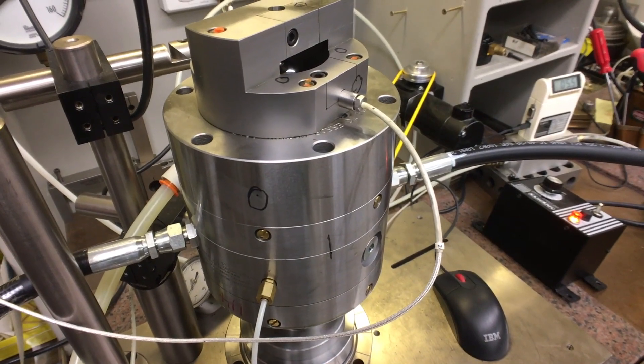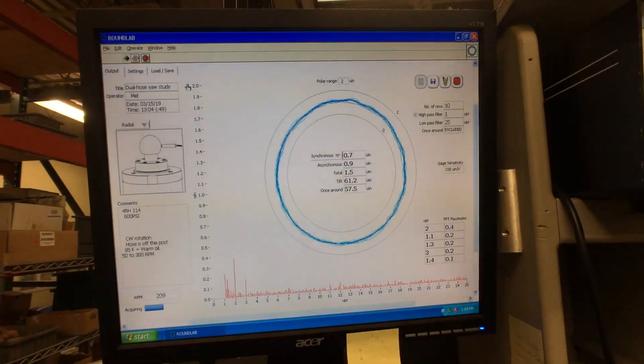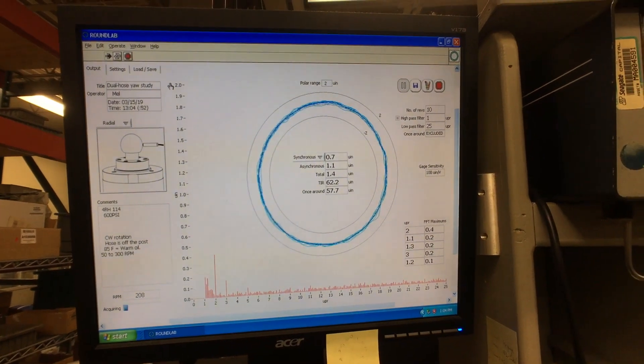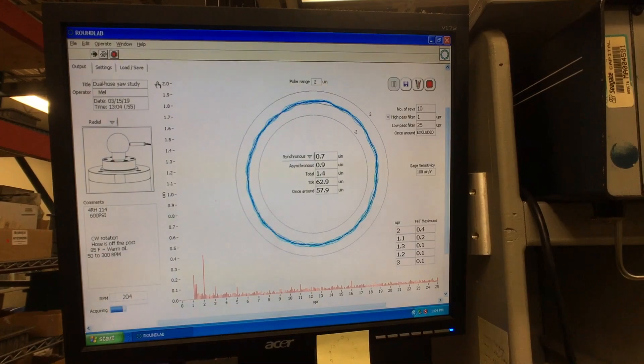And here is just another view of the test, scanning up to the air motion plot. You're seeing it's again around 0.7 micro-inches of air motion.